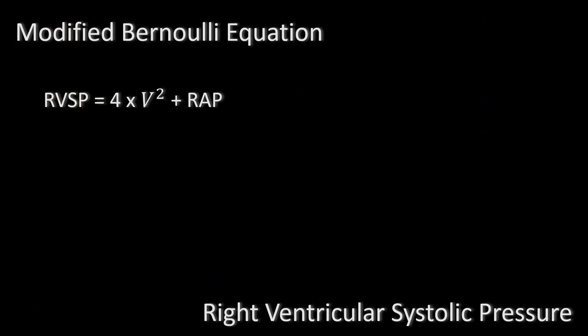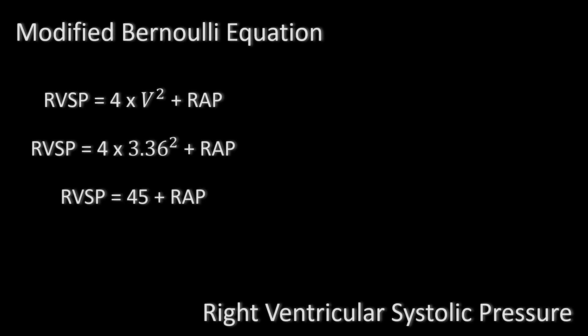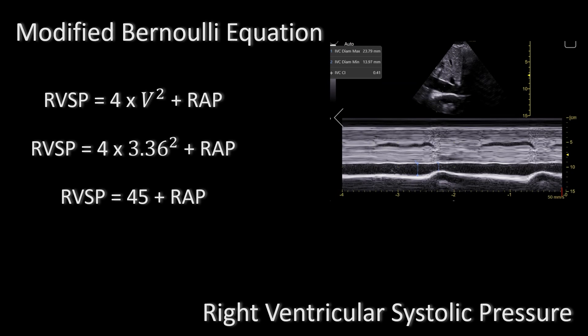As I showed earlier, the right ventricular systolic pressure equals 4 times the velocity squared plus the right atrial pressure. So 4 times 3.36 squared equals roughly 45 millimeters of mercury. Now for the right atrial pressure, if you have a central line, you can use that to measure the central venous pressure. If you don't have a central line, you can use the inferior vena cava size and collapsibility as I showed in a previous video to derive the right atrial pressure.